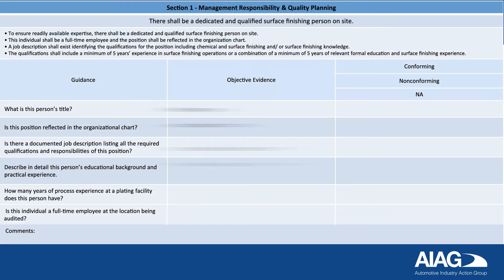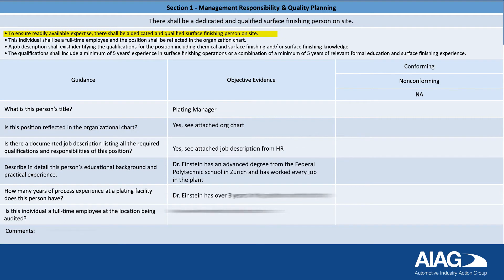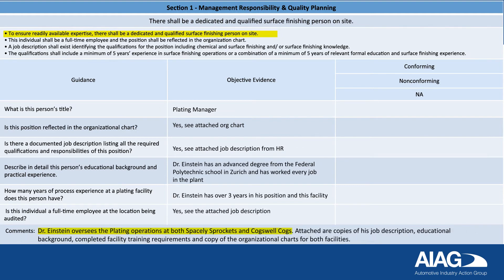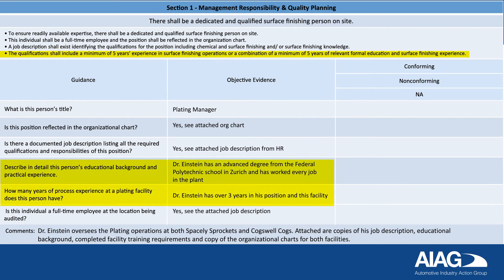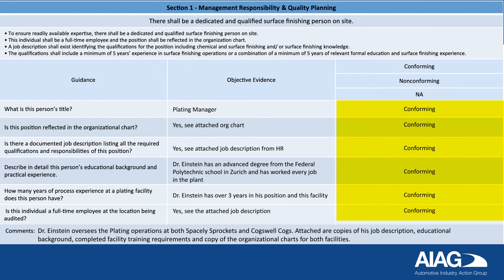Let's take a look at Section 1. To ensure readily available expertise, there should be a dedicated and qualified surface finishing person on site. This individual should be a full-time employee and the position shall be reflected in the organization chart. A job description shall exist identifying the qualifications for the position, including chemical and/or surface finishing knowledge. The qualification shall include a minimum of five years' experience in surface finishing operations, or a combination of a minimum of five years of relevant formal education and surface finishing experience. In this example assessment, the objective evidence supports a rating of conforming for all guidance.